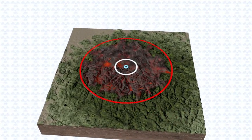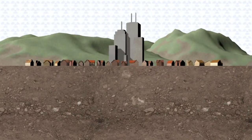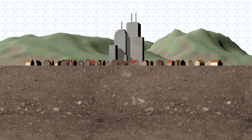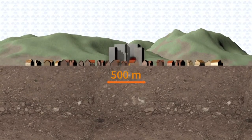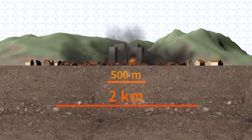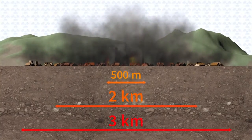The ensuing shockwave moves at the speed of sound, flattening steel and concrete constructions in the first 500 meters, brick buildings as far as two kilometers away, and most wooden structures within a three-kilometer radius.